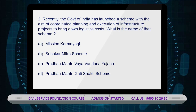The second question: Recently, the Government of India launched a scheme with the aim of coordinated planning and execution of infrastructure projects to bring down logistics costs. What is the name of that scheme? Option A: Mission Karma Yogi, Option B: Sagar Mitra Scheme, Option C: Pradhan Mantri Vaya Vandana Yojana, Option D: Pradhan Mantri GatiShakti Scheme.